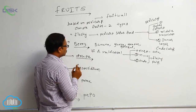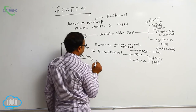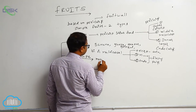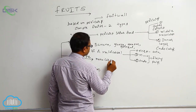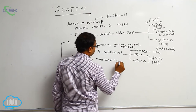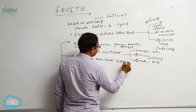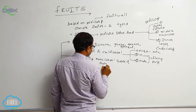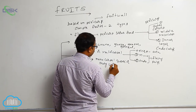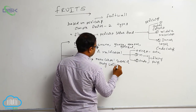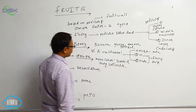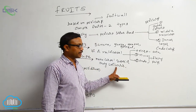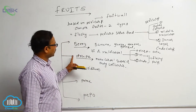Drupe — it is formed from a monocarpel, superior ovary in a unilocular condition. The fruit is formed from a monocarpel superior ovary in a unilocular condition, and that is known as drupe.